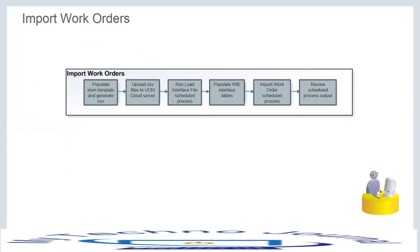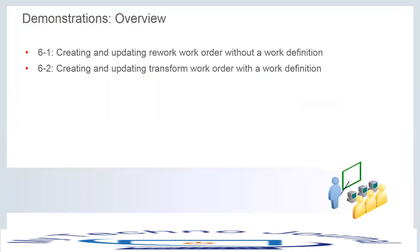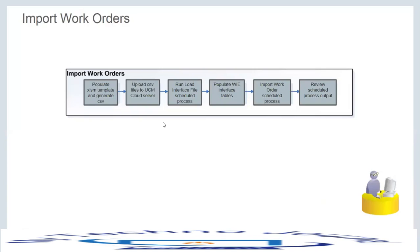To import work orders, download the FBDI Excel template, populate it with the relevant work order data, convert it to a CSV file, then run the Load Interface File scheduled process to populate the interface tables. Next, run the Import Work Orders scheduled process. Once complete, all work orders defined in the template are created in the application. The process is similar to item integration via FBDI — only the file, UCM path, and import program differ.